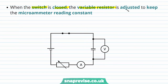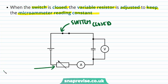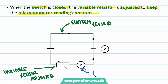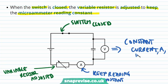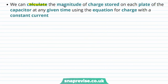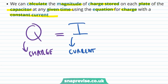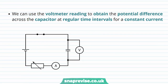When the switch is closed, the variable resistor is adjusted to keep the microammeter reading constant. This keeps a constant current, which we'll call A, flowing in the circuit. We know that we can calculate the magnitude of charge stored on each plate of the capacitor at any given time using the equation for charge with a constant current: charge Q is equal to current I times time T.